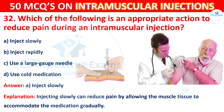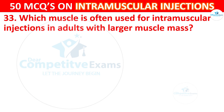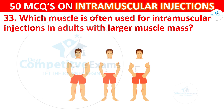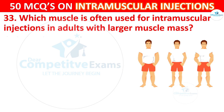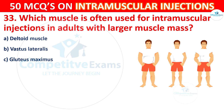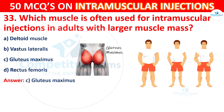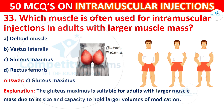Question 33: Which muscle is often used for intramuscular injections in adults with larger muscle mass? Options are: deltoid muscle, vastus lateralis, gluteus maximus, or rectus femoris. The correct answer is C, gluteus maximus. The gluteus maximus is suitable for adults with larger muscle mass due to its size and capacity to hold larger volumes of medication.